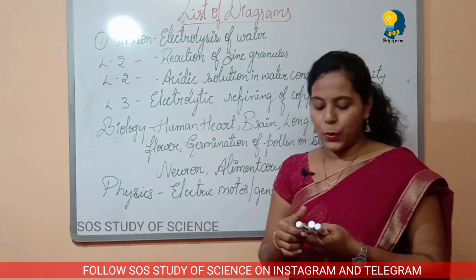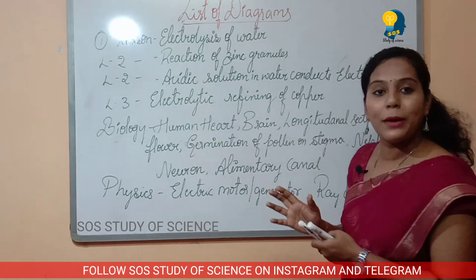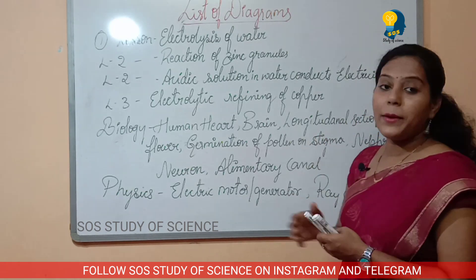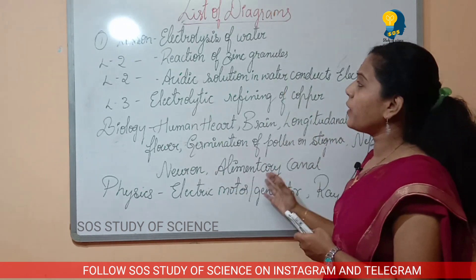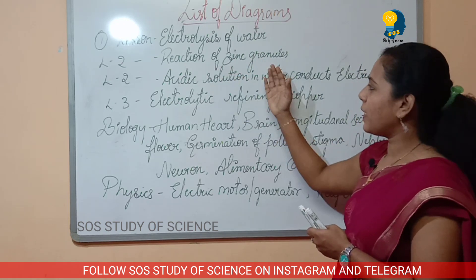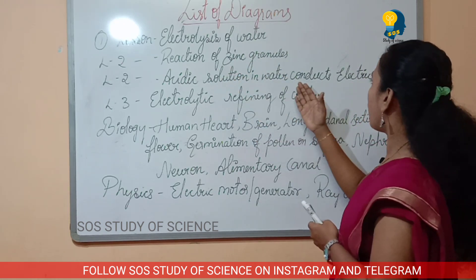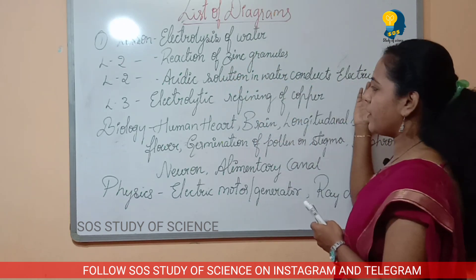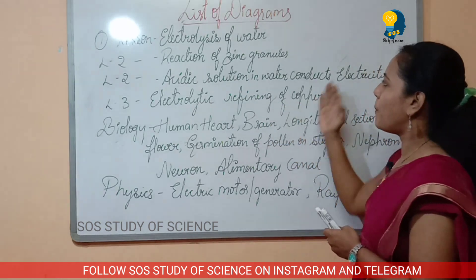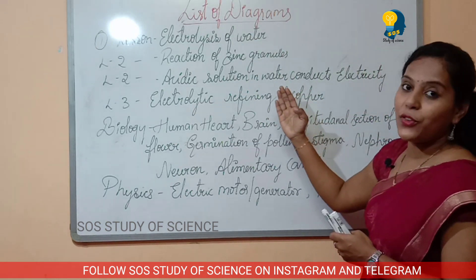Let's take a look at the diagrams. I will tell you the list of diagrams. In these diagrams, there are: electrolysis of water, reaction of zinc granules, acidic solution in water conducts electricity, and electrolytic refining of copper. These are four diagrams in chemistry.